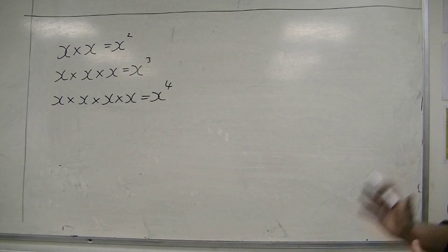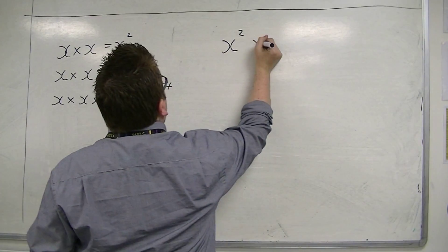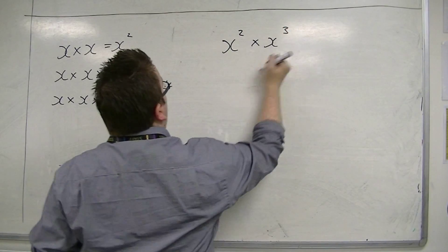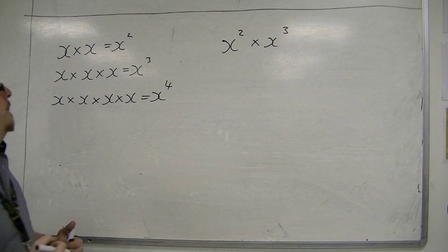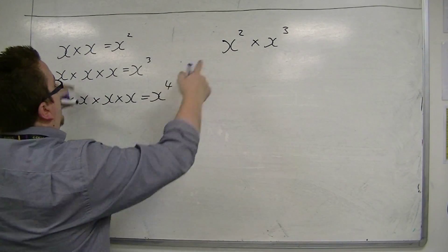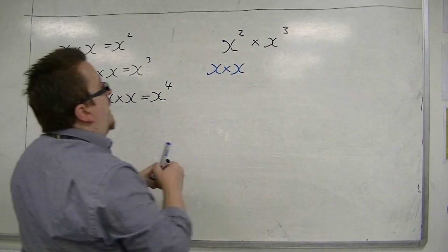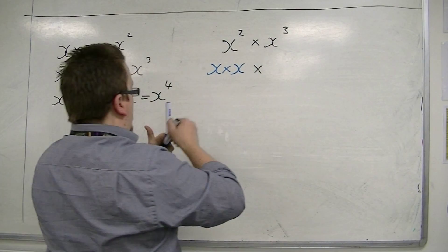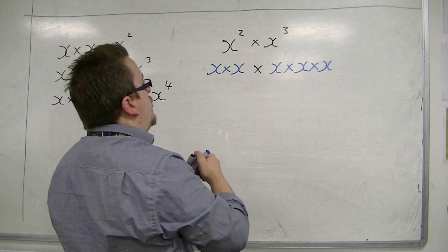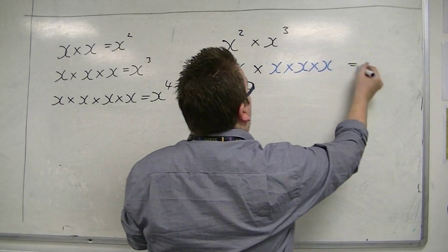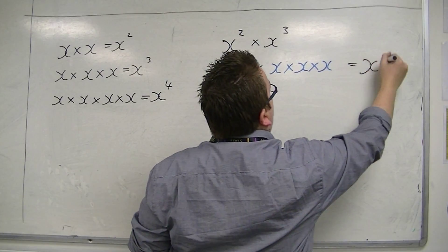Now, if we had something like x squared times x cubed — multiplying two of these x to the powers together — well, x squared is x times x, and x cubed is x times x times x. If we combine these, that means we've got x times x times x times x times x, which would be x to the power of 5.